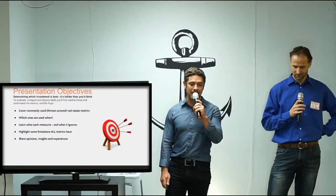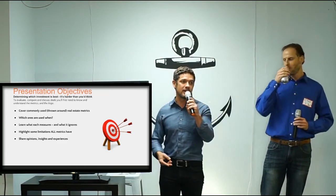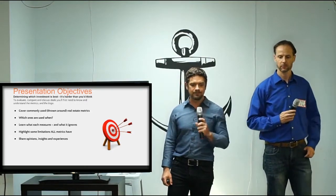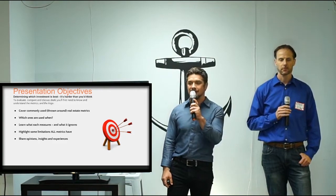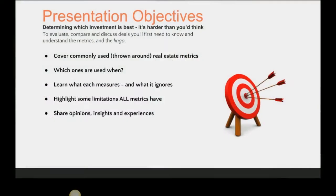The presentation objectives: determining which investment is best is harder than you think. You'll get inundated with potential deals, especially when talking to brokers. We'll be covering commonly used real estate metrics — IRR, cash on cash, and others — which ones are used when, because there are appropriate times to use certain metrics for commercial deals versus single-family deals. We'll learn which measures to use, which to ignore, and highlight the limitations so you don't just say 'the metric was above the threshold, so I'm buying the deal.' There'll be caveats and things you'll want to dig into more.